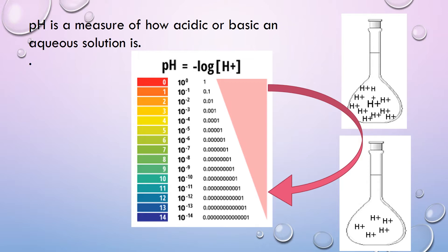In negative exponent form, the greater number — that is, 10 raised to power minus 6 or 10 raised to power minus 14 — is considered less than 10 raised to power minus 1. This figure represents that at pH 0, the hydrogen ion concentration will be maximum in solution. While at pH 7 or pH 14, the hydrogen ion concentration will be minimal.